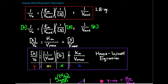The Lineweaver-Burk equation is certainly the most common method we have to estimate Vmax and Km of the enzyme. But it turns out there's another way we can manipulate this equation, and we can also get something called the Haynes-Wolf equation. The Haynes-Wolf equation is also useful for estimating the Vmax and Km of an enzyme, and we're going to show how you derive it now.